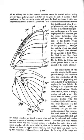Capitulum: the head of a capitate structure, such as a capitate antenna, or of a capitate halter. Carina: keel-like elevation, or ridge, on the body wall of an insect.